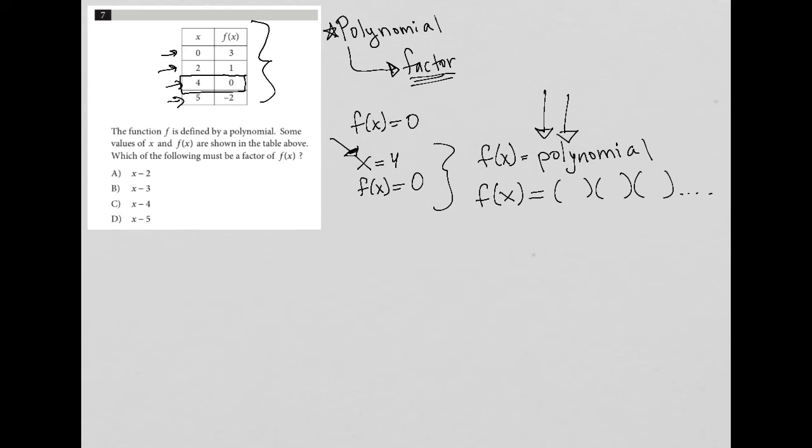then I say, okay, this information tells me that f(x) is zero when x is equal to four, which means one of these parentheses must be four minus four. Again, x minus four, but I'm replacing x with four. I'm replacing that first x with a four.